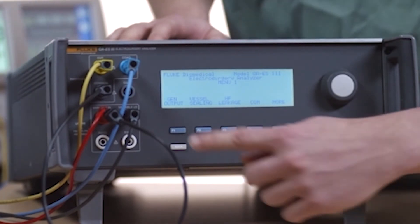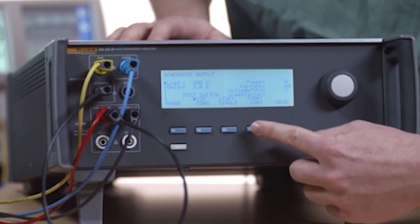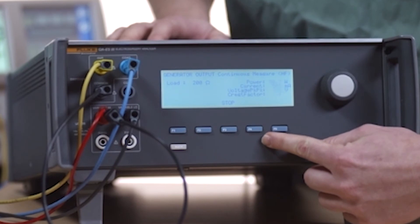In generator output tests, the continuous measurement mode of the QAES3 activates the footswitch relays to turn on the ESU being tested.